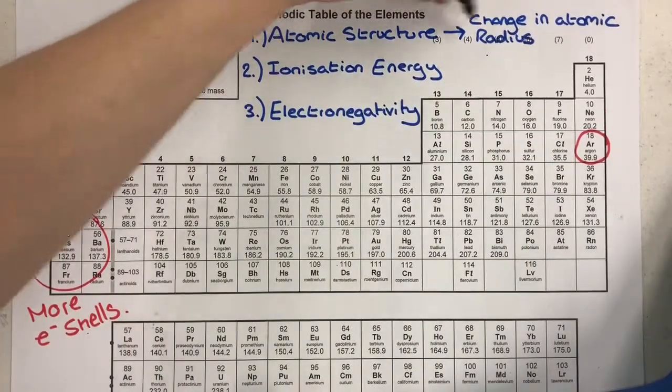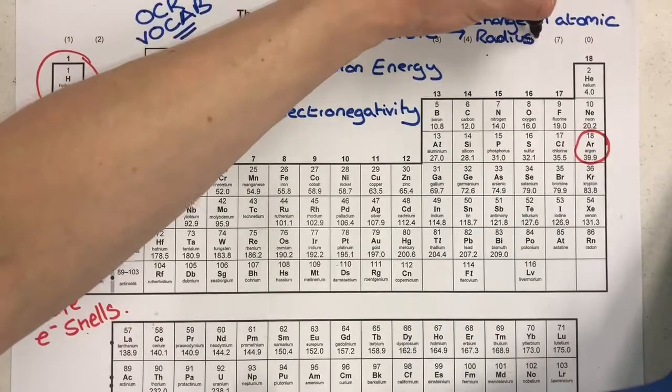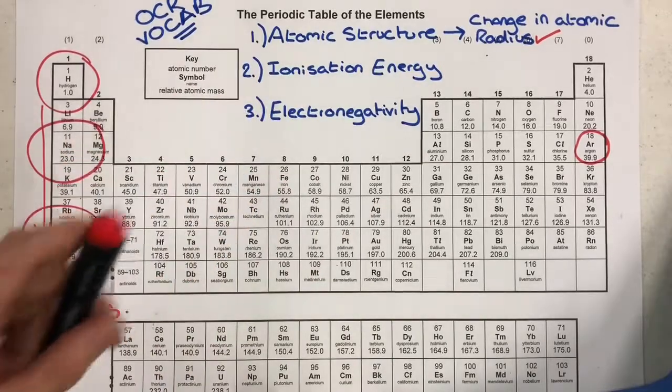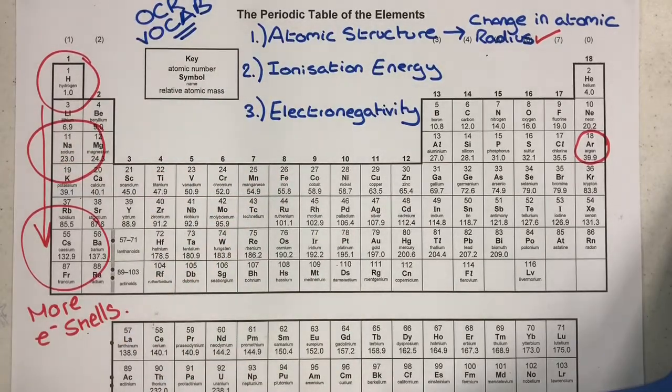So that's atomic structure looking at change in atomic radius. Now we need to look at ionization energy. First off we need a definition to remind ourselves. Ionization energy is the minimum amount of energy required to remove one mole of electrons from one mole of gaseous atoms or atoms in the gaseous state.